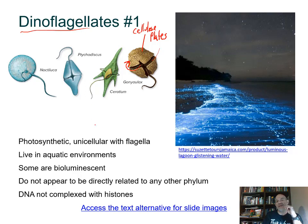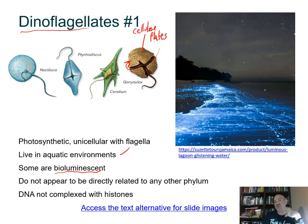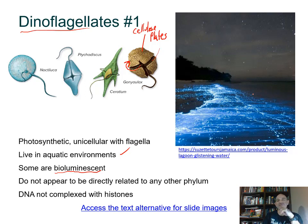They are photosynthetic and unicellular, living in aquatic habitats. Some have the ability to bioluminesce — when waves disturb the water, that energy stimulates these cells to produce light through enzymatic reactions. Bioluminescence is seen in many organisms, including familiar fireflies. Here you can see water lit up from dinoflagellates capable of bioluminescing.